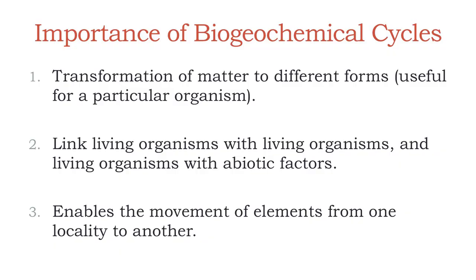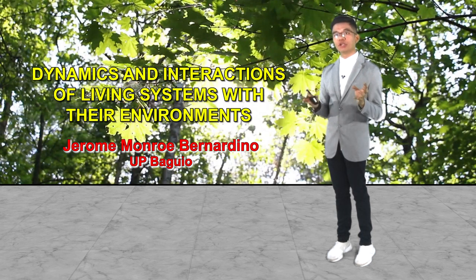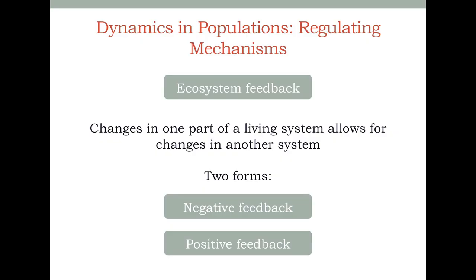The last importance has something to do with the composition of the abiotic components of the ecosystem. This last importance of biogeochemical cycles is the enabling of the movement of elements from one locality to another. Whenever these elements move from one locality to another, they become part of the localities serving a particular purpose. All of these three importances take part in establishing the dynamics in certain types of systems, one of which is the population. Let me now proceed to the final topic: the dynamics in population, particularly the regulatory mechanisms.